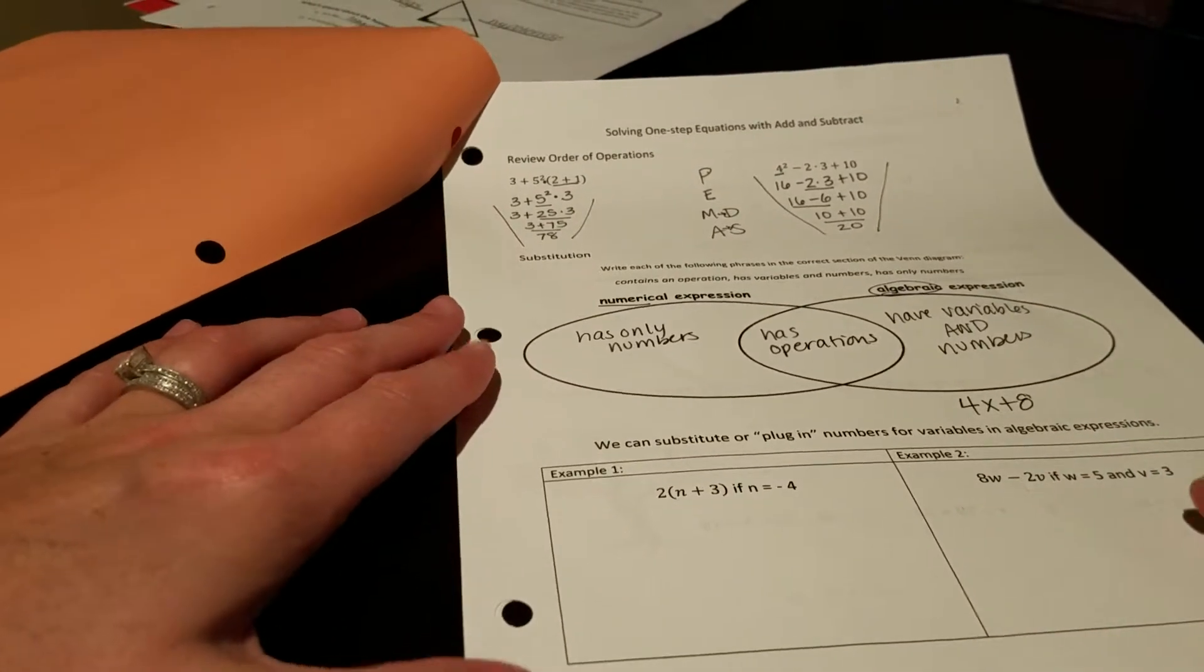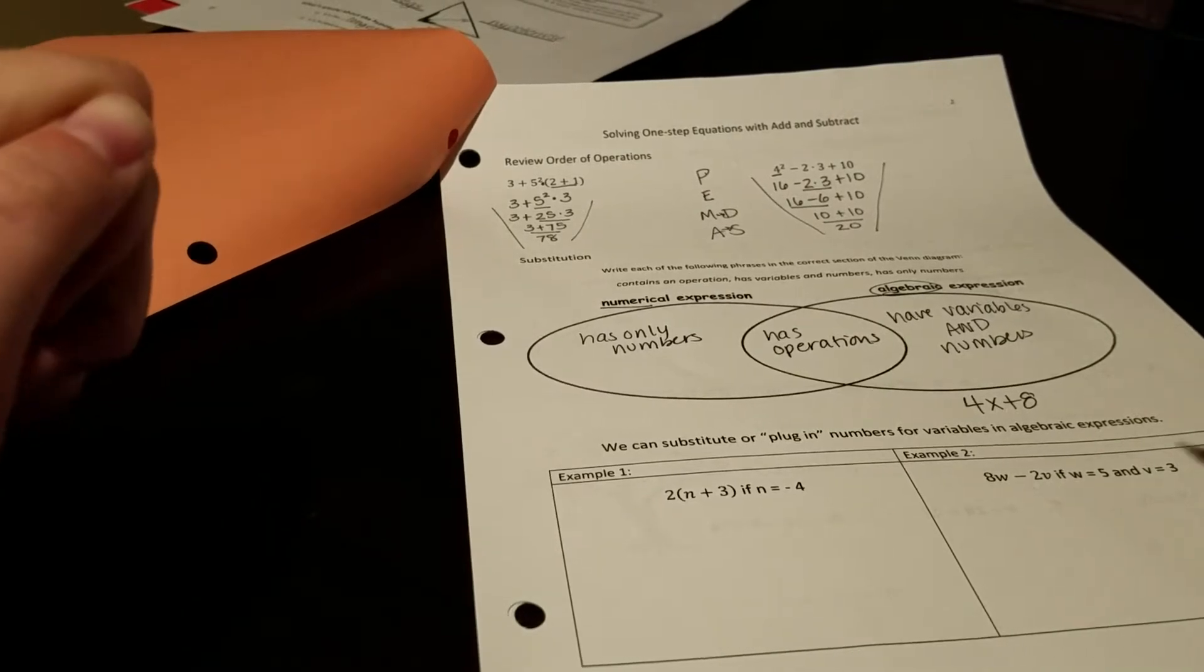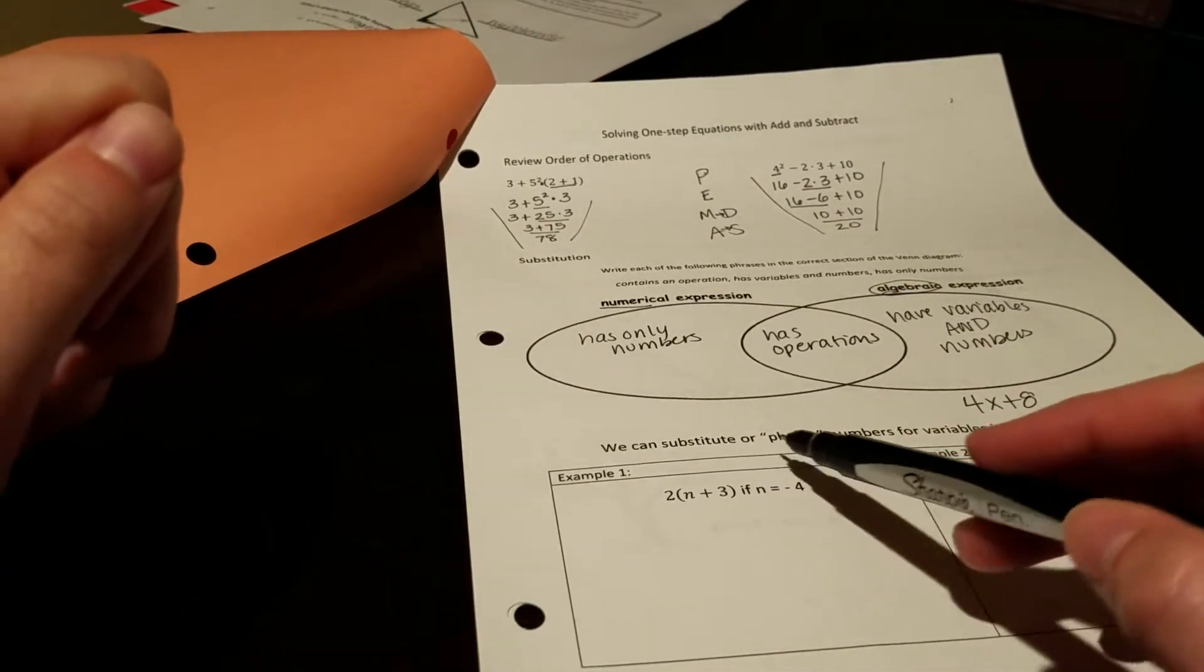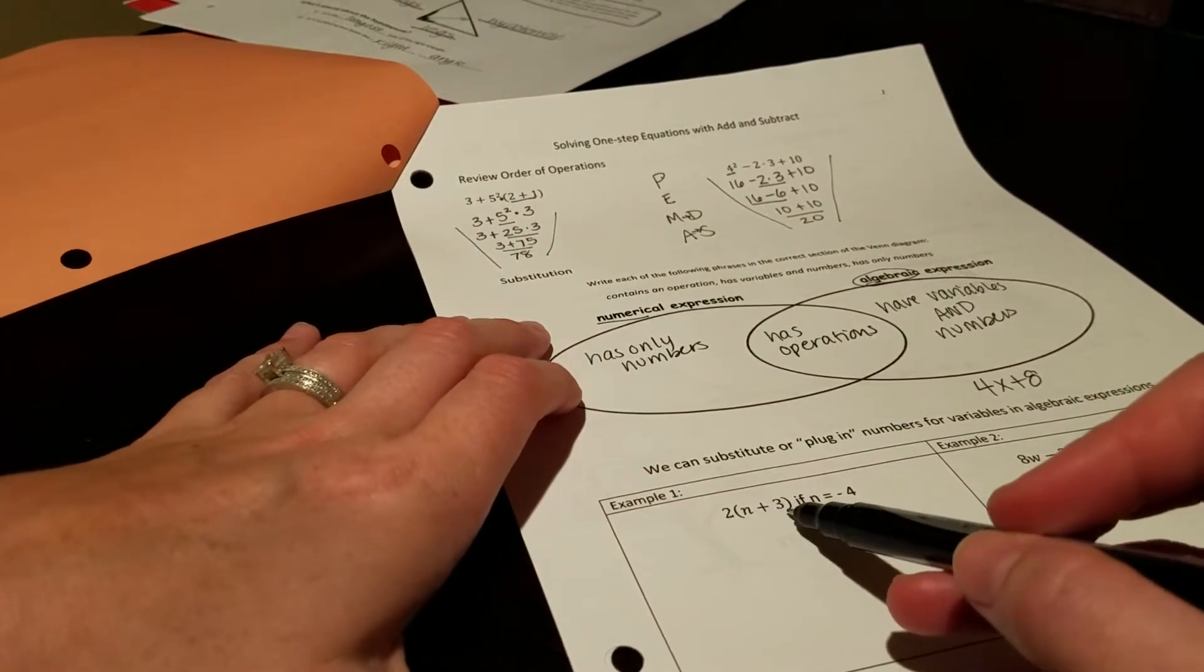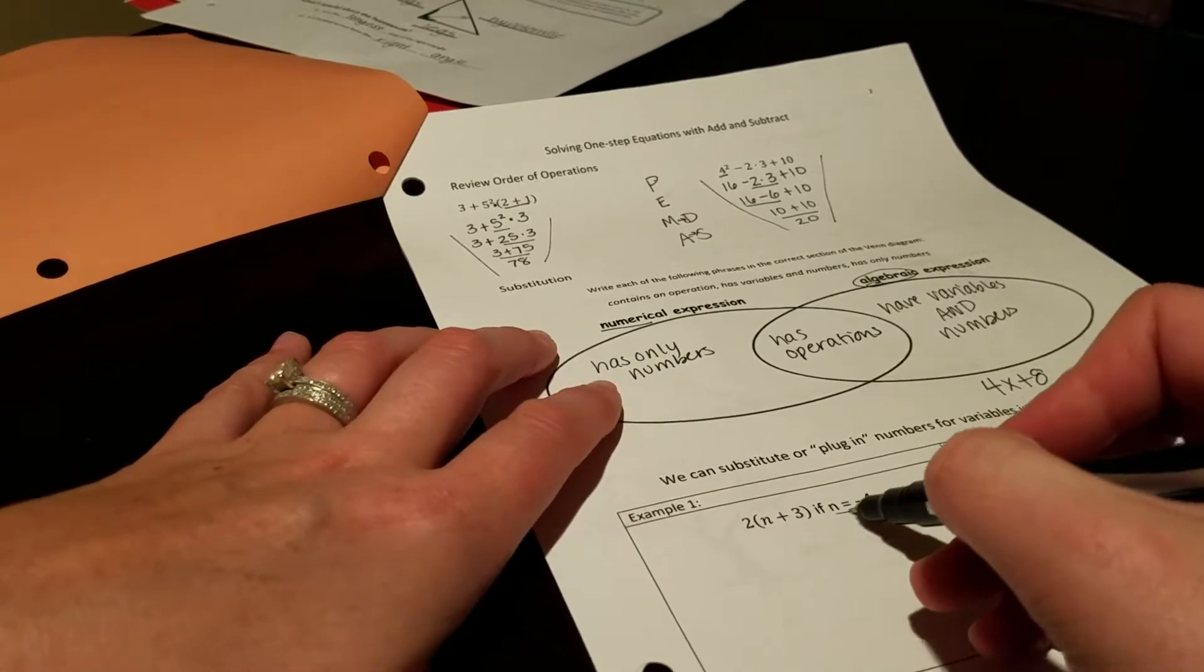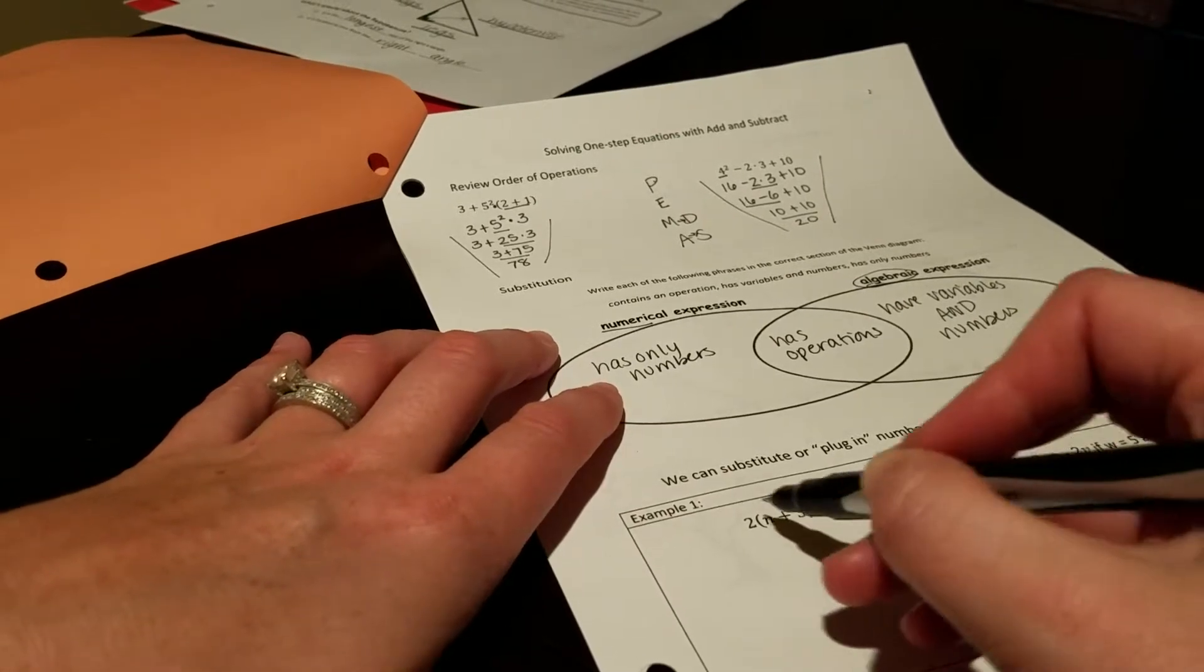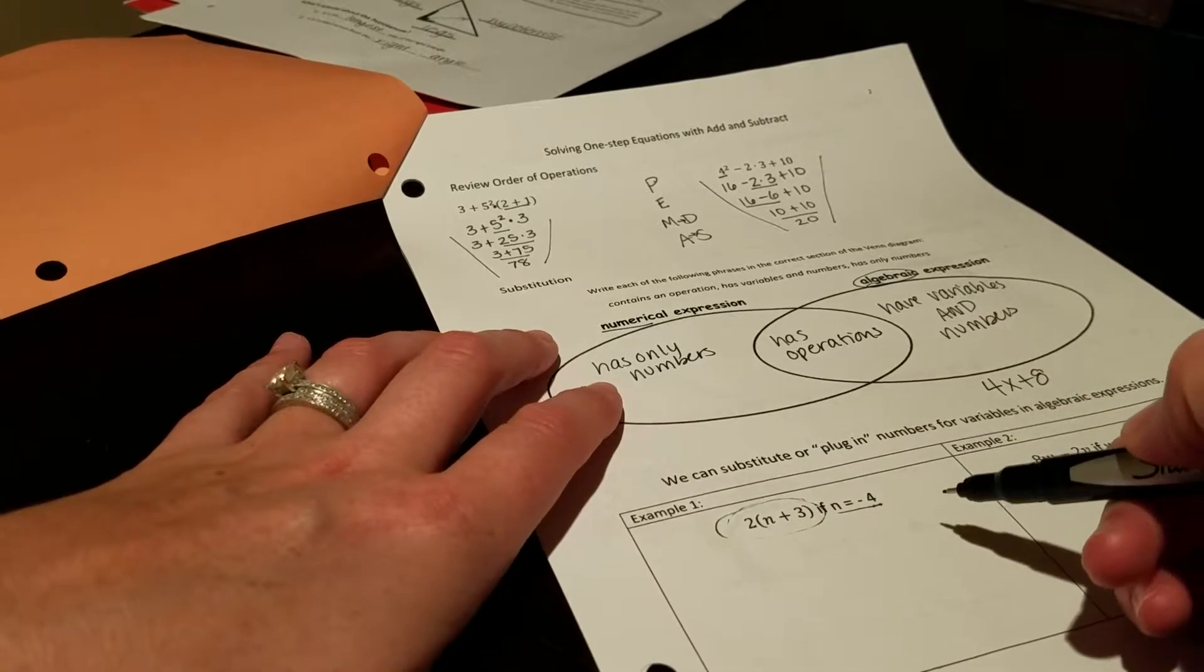So substitution is kind of important for us to be able to check our work in the next part of our chapter. So what we can do is we can actually substitute or plug in numbers for variables in an algebraic expression. So in this expression, 2 times the quantity n plus 3, if I tell you that n equals negative 4, it tells you go back to this expression and every time you see a negative 4, plug it in.